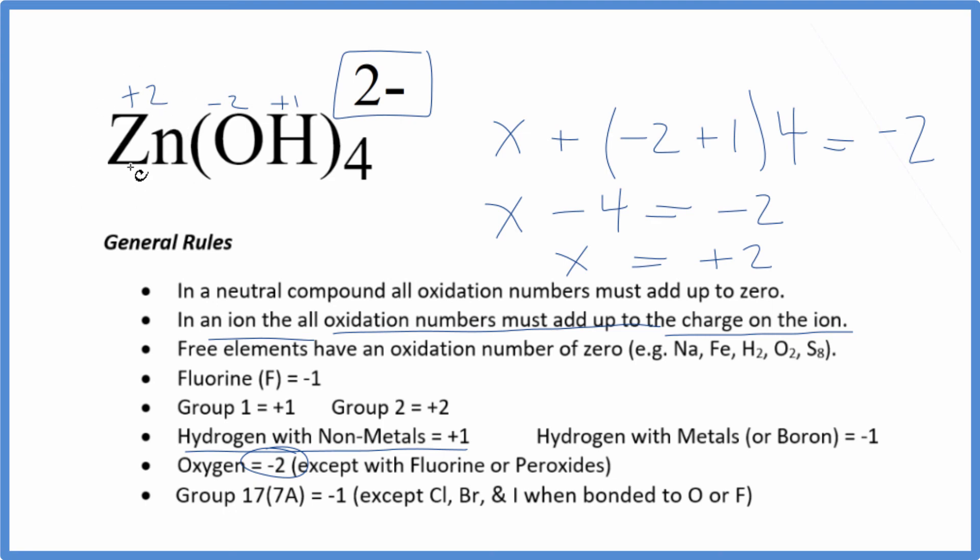That was our zinc, which turned out to be plus 2. This is Dr. B with the oxidation numbers for each element in zincate, Zn(OH)₄²⁻. Thanks for watching.